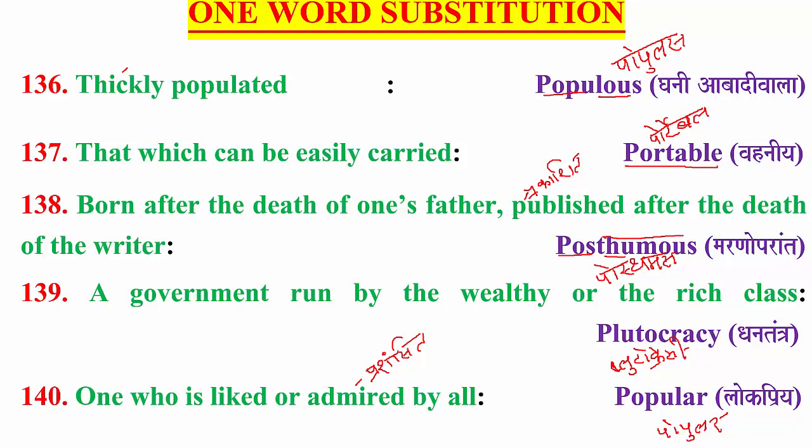The fourth word is 'plutocracy' — a two-syllable word. In Hindi: 'dhan tantra' — dhan means money/wealth, tantra means rule/governance, so it means rule by the wealthy. Also related: popular means 'log priye'.